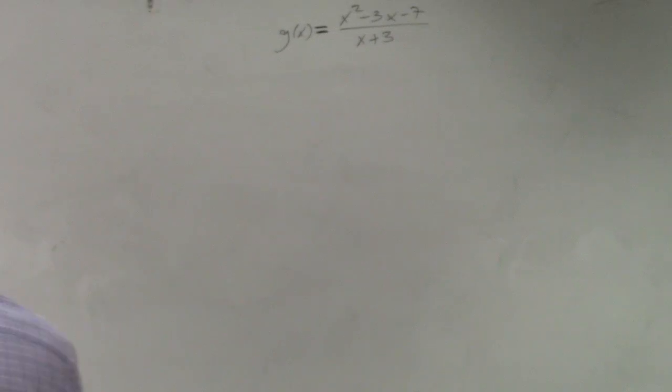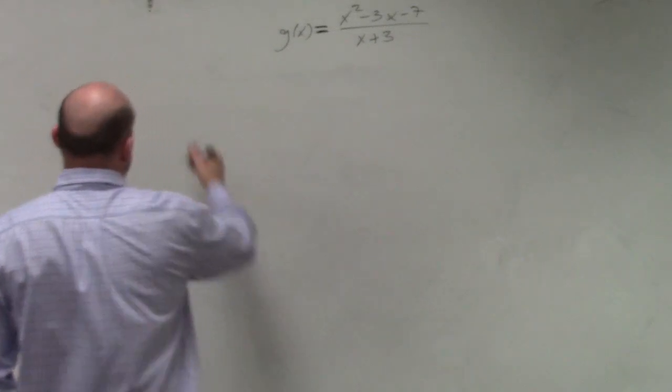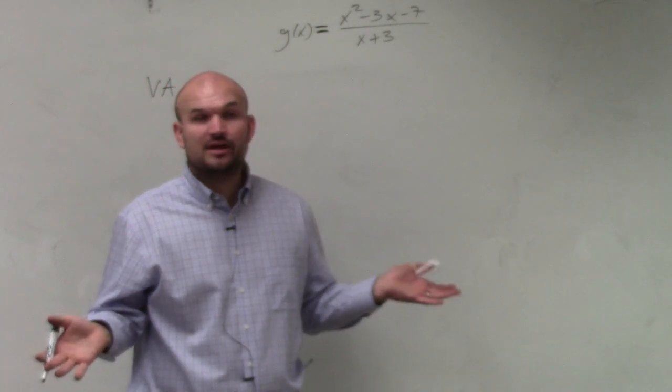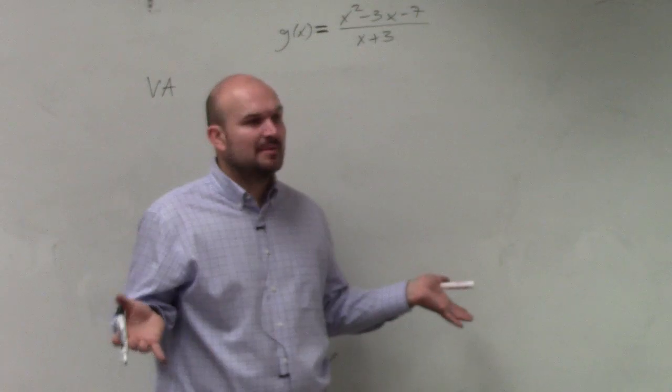You don't do anything different. First thing you always want to do is vertical asymptotes, just because I think vertical asymptotes are the easiest. Factor, and then make sure you don't have any holes, and then just set the denominator equal to 0.